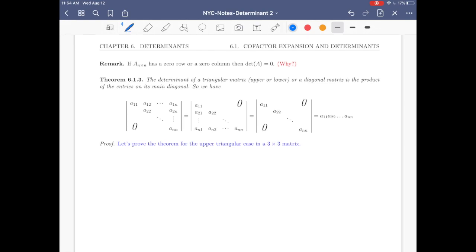Now, let's look at theorem 6.1.3. The determinant of a triangular matrix, upper or lower, both cases, or a diagonal matrix, is the product of the entries on its main diagonal. So triangular matrix, diagonal matrix, is the product of the entries in the main diagonal.